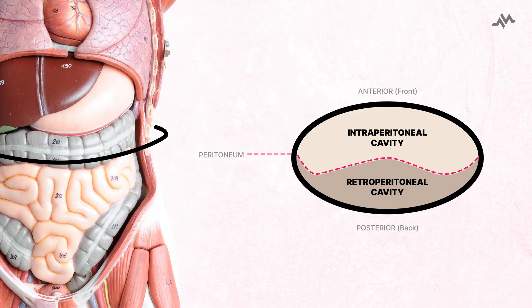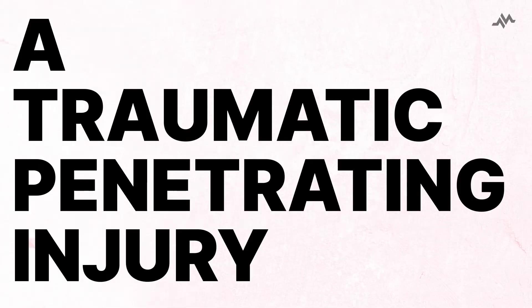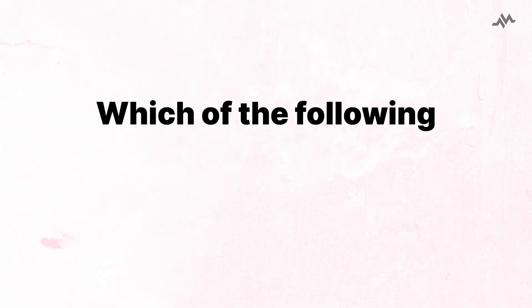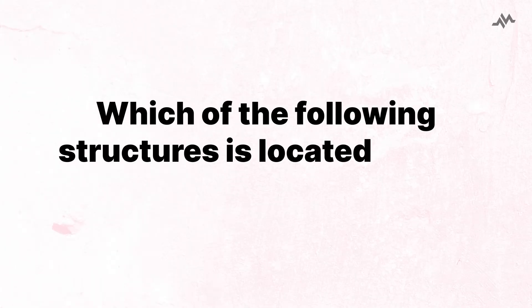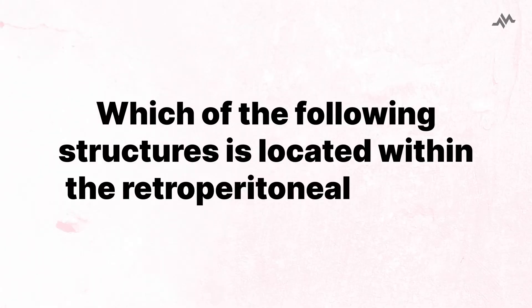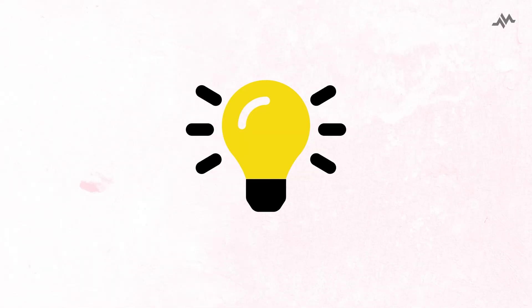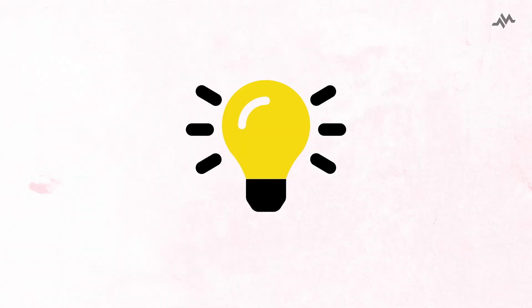The division between these spaces is a test and exam favorite. A question you might come across may describe a traumatic penetrating injury, like a stab or a gunshot wound, and then ask you which of the following structures is located within the retroperitoneal space. Luckily, I have a mnemonic to share with you that will help you remember the organs located within this cavity.